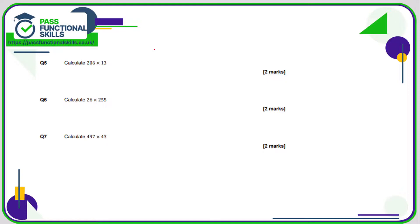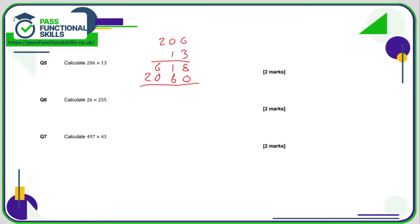Question 6: 206 times 13. Put 206 on the top and 13 on the bottom. 3 sixes are 18, 8 carry 1; 3 zeros are 0 plus 1 is 1; 3 twos are 6. Next line put in a 0 for the 1 of 10: 1 six is 6, 1 zero is 0, 1 two is 2. Adding together: 8, 7, 6, 2 — so the answer is 2678.